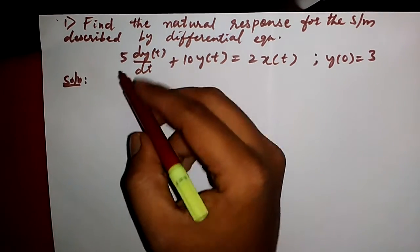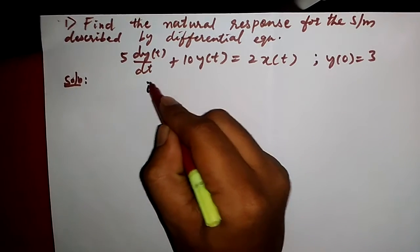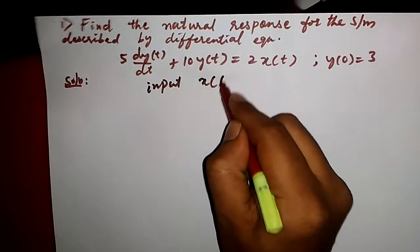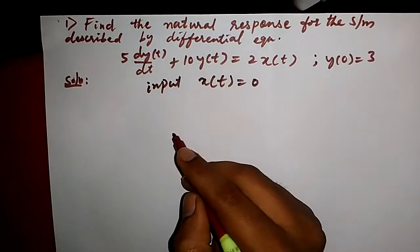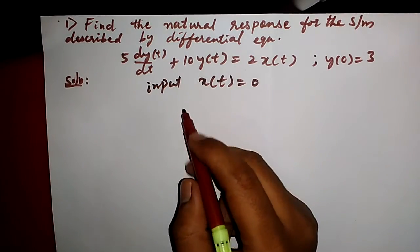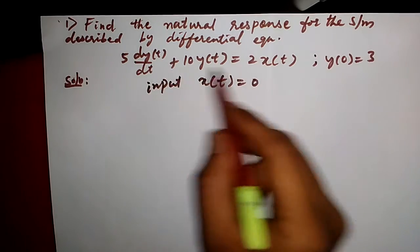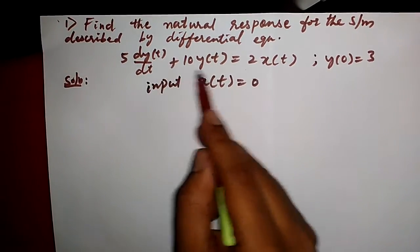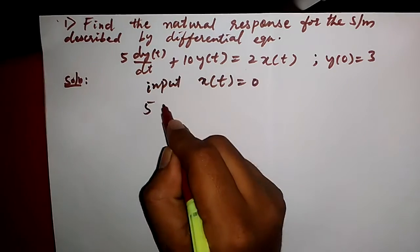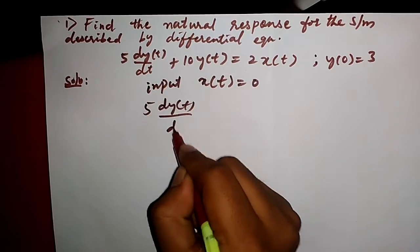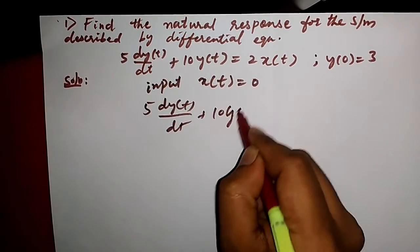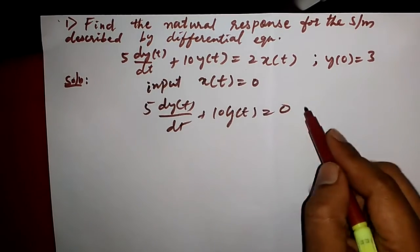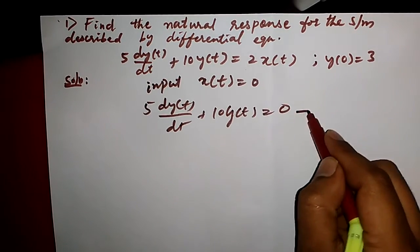First of all, we need to consider the input x(t) is equal to 0. Then we write down the equation to get the homogeneous equation. So this equation — 5 dy(t)/dt plus 10 y(t) — will be equal to 0. This is the first equation.